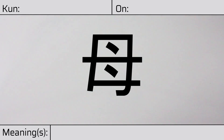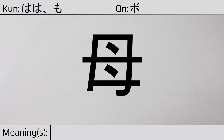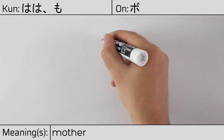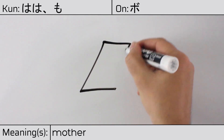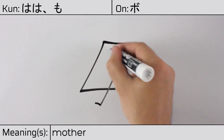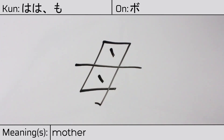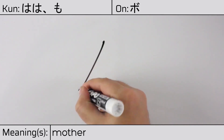Welcome to this lesson on Japanese kanji. Today, we'll be discussing this character. This kanji has kunyomi or Japanese readings of ha-ha or mo, and it has an onyomi or Chinese reading of bo. This character has the meaning mother. Here is the stroke order.